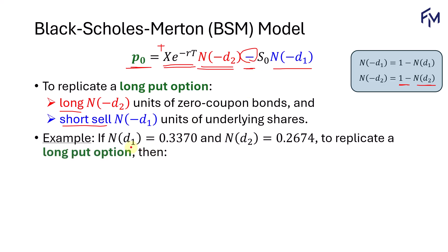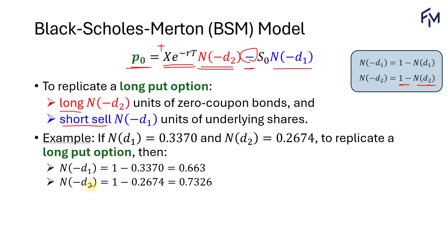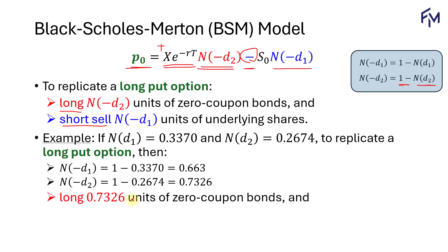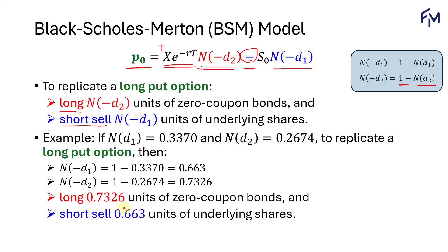If you are given the value of N(D sub 1) and N(D sub 2), you first compute N of negative D sub 1, which is 1 minus 0.337, giving us 0.663. And N of negative D sub 2 is 1 minus 0.2674, so that's 0.7326. To replicate the long put option, we will long 0.7326 units of the zero coupon bonds, and we will short sell 0.663 units of the underlying shares.